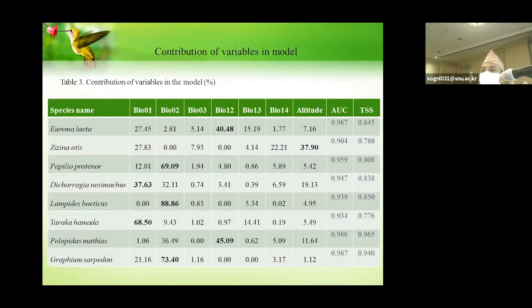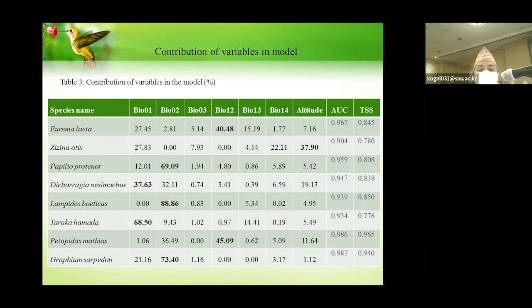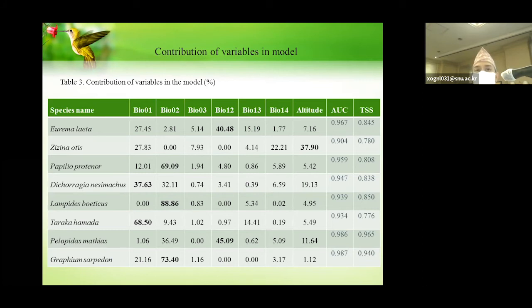Now, results and discussion. Based on the model prediction, out of the seven variables — six bioclimatic and one altitude — the temperature-related variables are the main dominating variables. One species, Zizina otis, is the species for which altitude is the most dominating factor. The model evaluation and validation shows AUC and TSS values, indicating that model prediction is more accurate because of the balance between the AUC and TSS values.